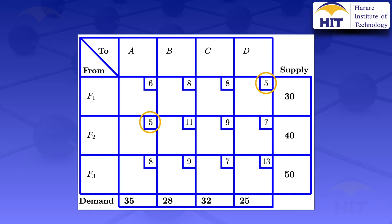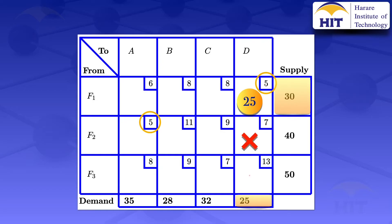So in this case we allocate in cell F1D first. Looking at cell F1D, the supply is 30 and the demand is 25. To see how much we can allocate, we take the minimum of 30 and 25, which gives us 25. We allocate 25 units there. This means we have met the demand requirements for destination D, so we cross out the remaining cells in that column — we can no longer allocate there.